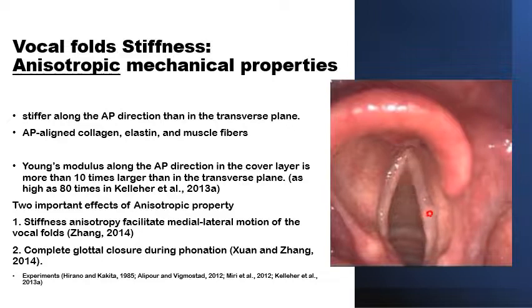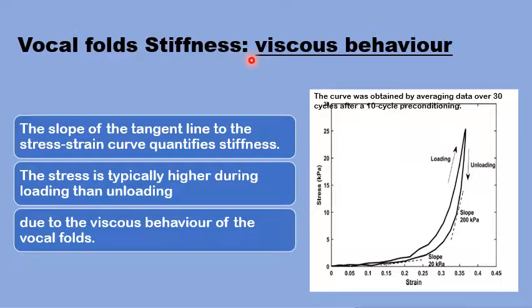The third property of the vocal fold stiffness is its viscous behavior. The stress-strain curve for loading of the vocal fold — stretching it or compressing it — is different from the graph while unloading, when it is returned back to its neutral position. The stress is typically higher during loading than it is during unloading. This is basically due to the viscous behavior of the vocal fold material.